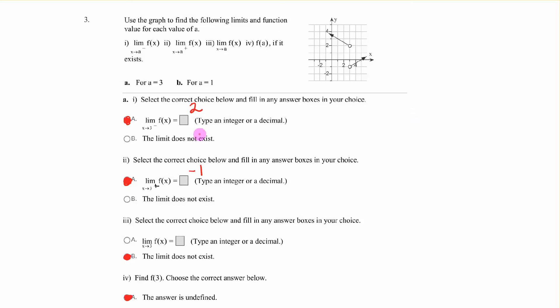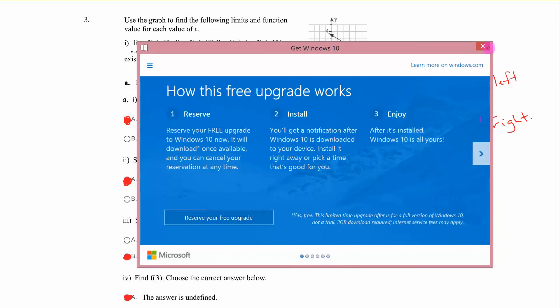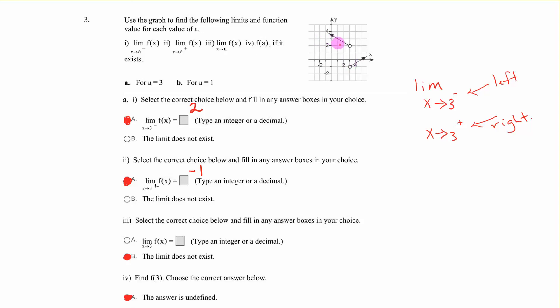All right, the limit as x approaches 3. Now, here we have a new term, x approaches 3 with a minus there. That means from the left. And if you had x approaches 3 with a plus, that means from the right. Okay. All right, so 3 from the left. As we're coming in from the left, what's the y value there? 2. If you're coming in from the right. What's the y value there? Negative 1.